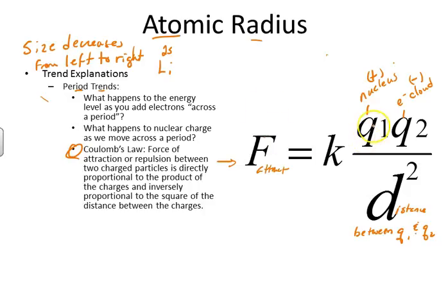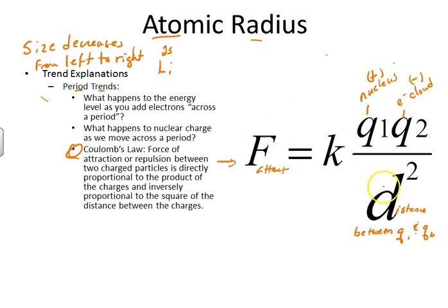If we have an increased value of Q1, Q2, or both, and keep the distance the same, force increases. If we increase distance while keeping Q1 and Q2 the same, we're dividing by a larger number and force decreases. Direct proportion with charges: increase them, force increases. Inverse proportion with distance: increase distance, force decreases. This does a lot to explain the actual properties we're referring to.